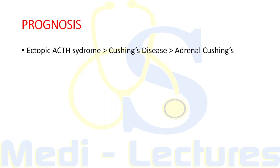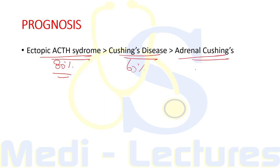Regarding prognosis, the best outcome is for ectopic ACTH syndrome with an 80 percent recovery rate, followed by Cushing's disease at 60 percent, and adrenal Cushing's with the poorest prognosis at 40 percent recovery.